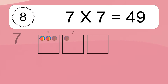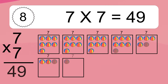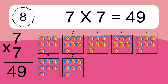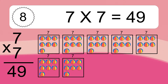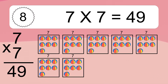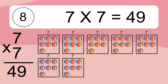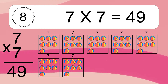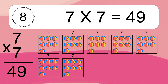7 times 7 equals 49. We have 7 boxes, and each box has 7 colorful balls inside. If you count all the balls in all the boxes together, you will have 7 times 7 balls. This equals 49 balls.